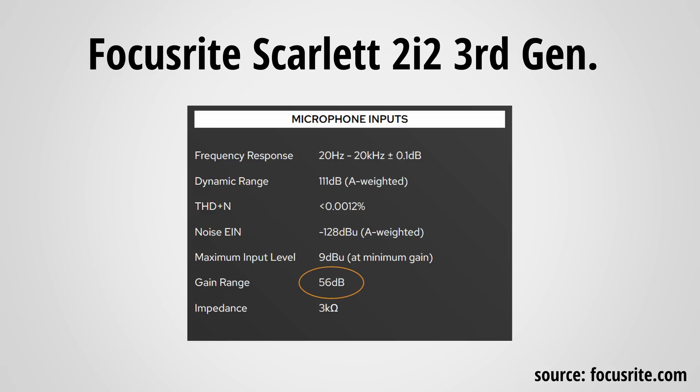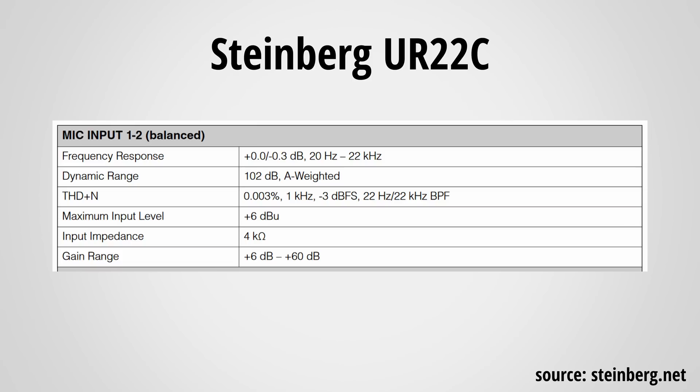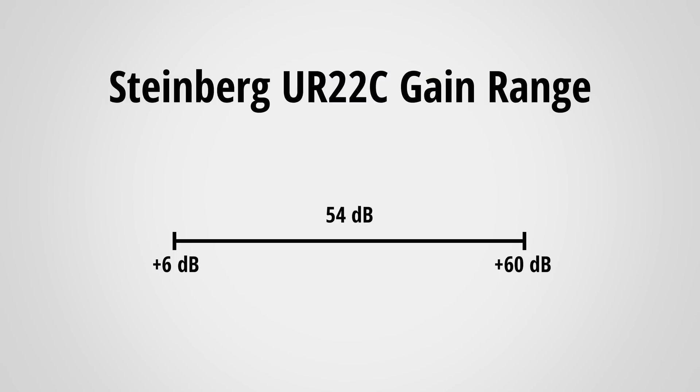Why is it that comparing the gain numbers stated by the manufacturers won't work? Well, there's a smaller and a bigger reason for this. Let's start with the smaller one. The first mistake many people make is comparing the wrong specifications. Sometimes manufacturers state a gain range and other times they state the actual gain of the preamp. For example, Focusrite states a gain range of 56dB for the 2i2. Steinberg, on the other hand, states that for the UR22C you can adjust the gain from plus 6dB to plus 60dB. Many people are quick to compare the 56dB gain range of the 2i2 to the 60dB maximum gain of the UR22C. This is already comparing apples to oranges. The gain range of the UR22C is actually 54dB. But let's say you are aware of this and you're only comparing gain to gain and gain range to gain range.